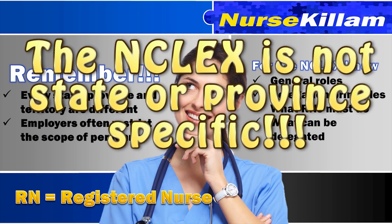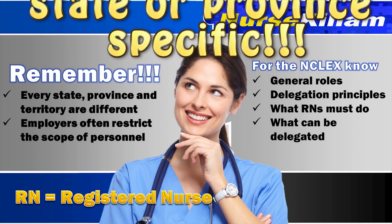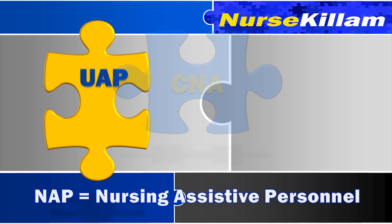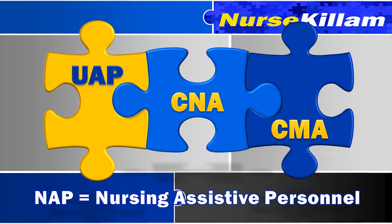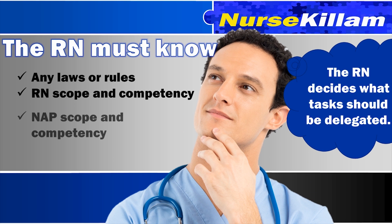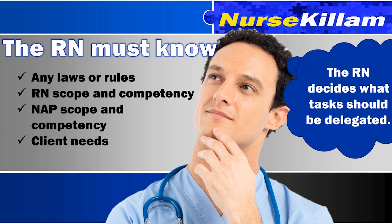You need to know what tasks need to be completed by the registered nurse and what tasks can be assigned to unlicensed assistive personnel and licensed practical nurses. You also need to know how to prioritize your own care. The NCSBN refers to people who work with nurses in structured nursing organizations as nursing assistive personnel. It is up to the registered nurse to assess if a task is appropriate for delegation. That means you need to know any laws or rules for delegation, your scope and the scope of the nursing assistive personnel, and client needs.